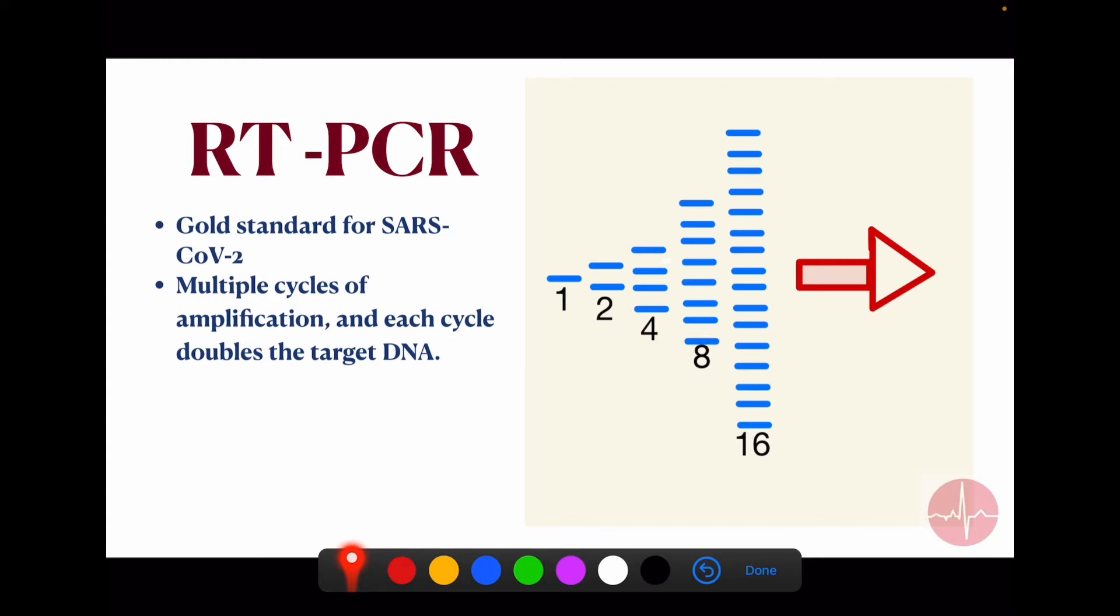First we need to understand that when we take the sample in the lab from the patient, we don't have enough nucleic acid material. So we have to multiply it up to the detectable level in the lab, and here the PCR works. In the PCR we multiply the genetic material in each cycle. After each cycle we double the DNA material.